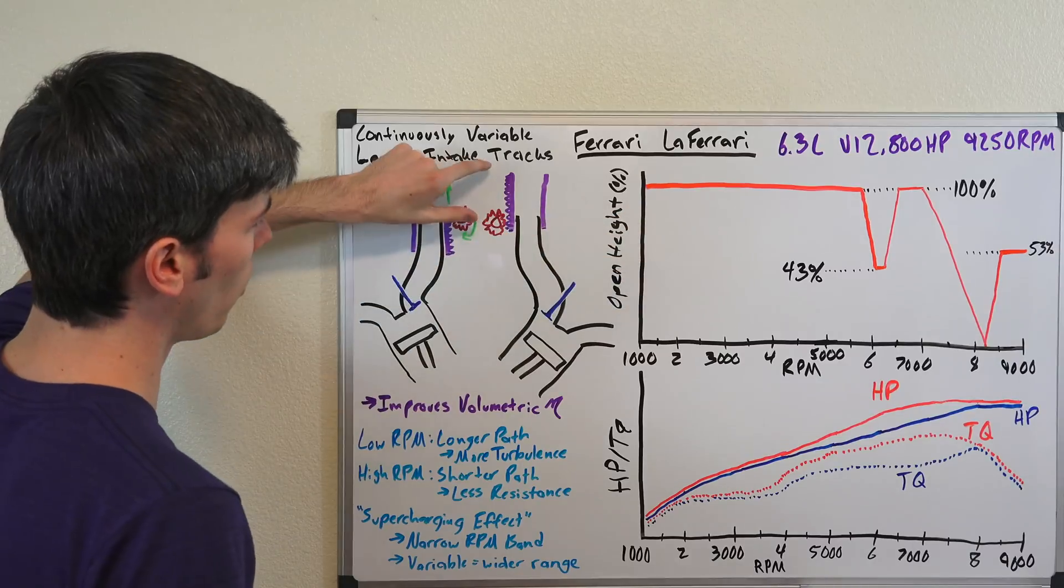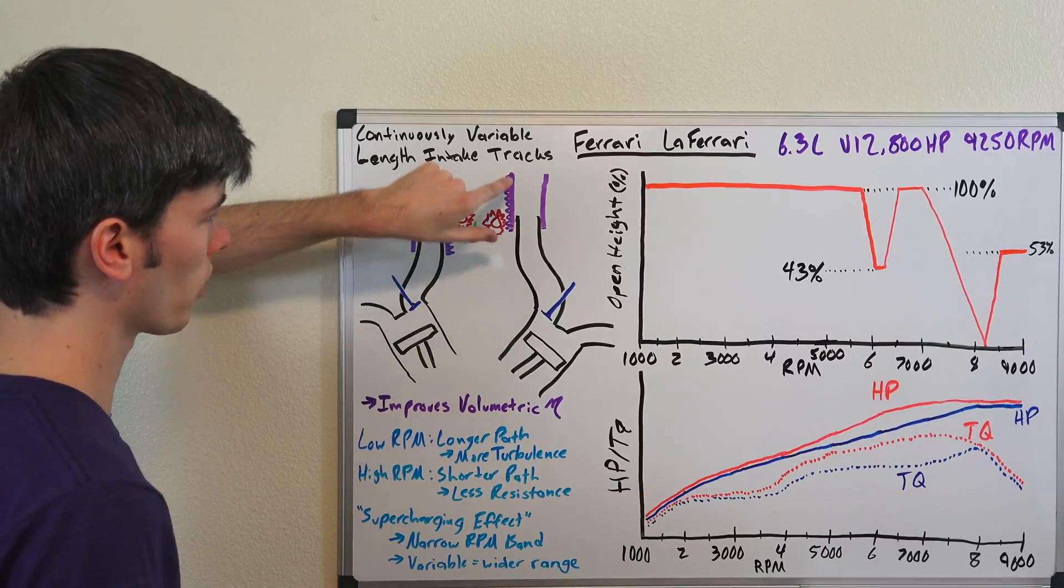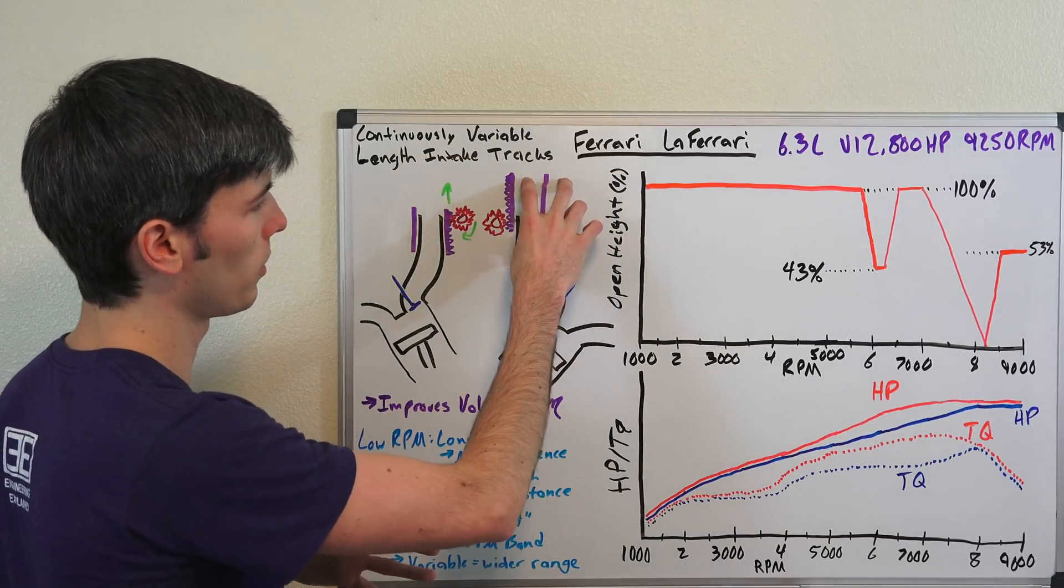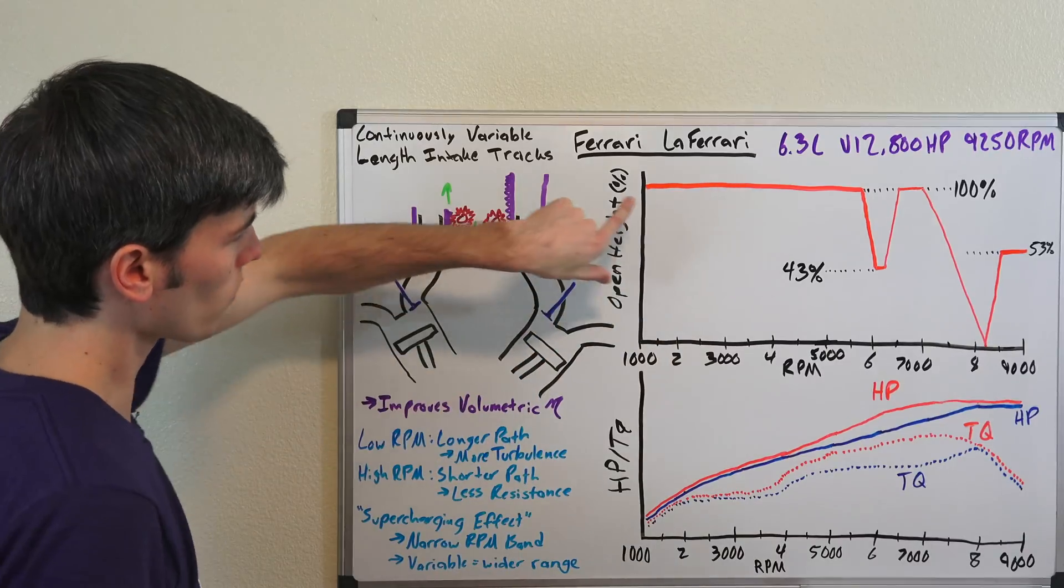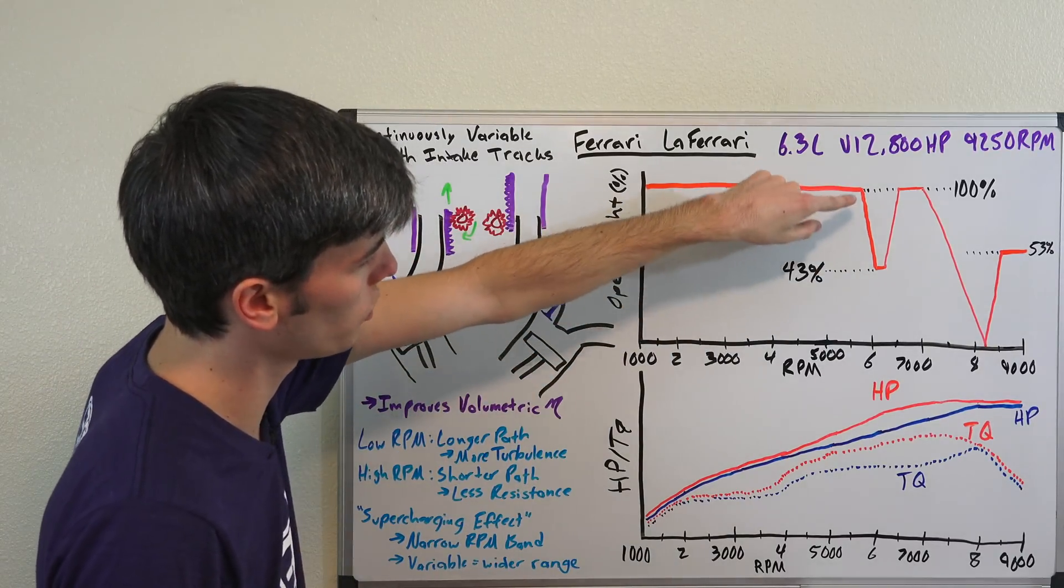So it stays at 100% all the way opened up top. Like we were saying, at lower RPMs you're going to want a longer path and so you're going to have that resonant frequency with that supercharging effect which seems to work better with a longer track there. Once you get to about 5,750 in RPM you drop down to 43%.